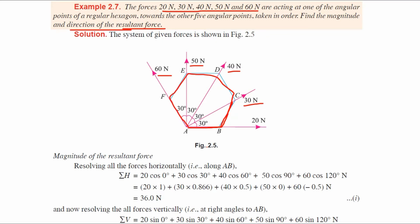We have to find the resultant force. The formula is R equals the square root of summation of horizontal force squared plus summation of vertical force squared. So we need to find summation of H and summation of V.